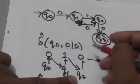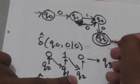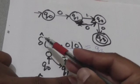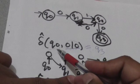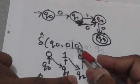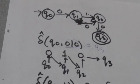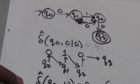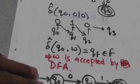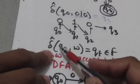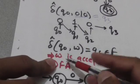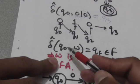When the machine is in state q2 and it reads 0, it jumps to state q3. So after reading the string 010 from state q0, the machine will jump to state q3. The output of the extended transition function for state q0 and string 010 is q3.